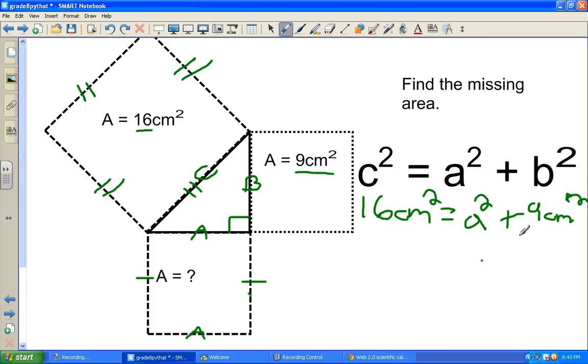Now all we have left to do, we want to move this 9 centimeters squared over to this side, so that it's only A squared on this side. And the way to get rid of plus 9 is to go minus 9. So if we take away 9 centimeters squared, that'll cancel out. And then we'll have to take away 9 centimeters squared.